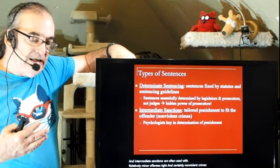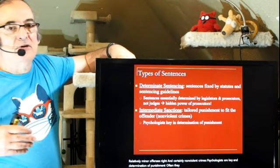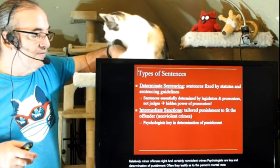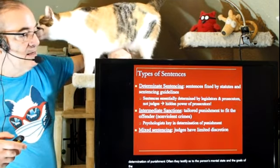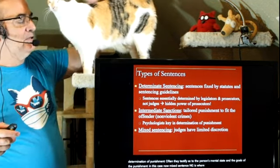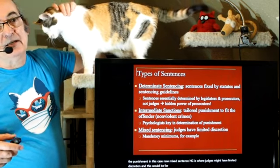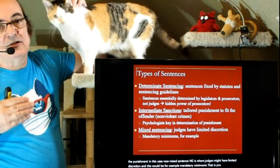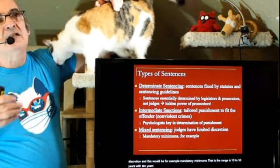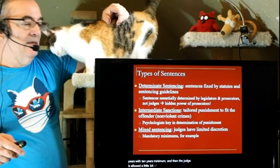Psychologists are key in the determination of punishment. They often testify as to the person's mental state and the goals of the punishment in a given case. Mixed sentencing is where judges might have limited discretion — for example, mandatory minimums. That is, the range might be 10 to 50 years with a 10-year minimum, and then the judge is allowed a little bit of discretion.